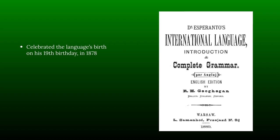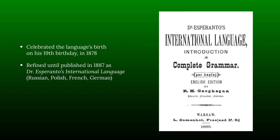On his 19th birthday in 1878, he had gotten far enough with the language that he celebrated its birth with his friends. But he continued to revise it until the year 1887, when it was finally published as Dr. Esperanto's International Language. That year, it was published in Russian, Polish, French, and German.